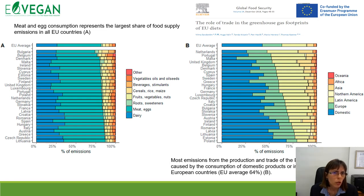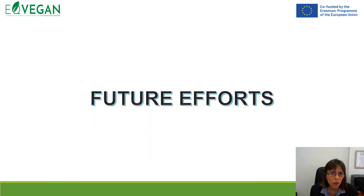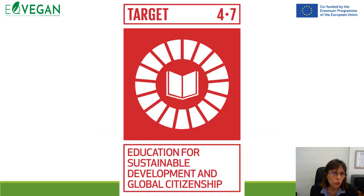Meat and egg consumption represents the largest share of food supply emissions in all EU countries. The aim is to use vegetable oils, oil seeds, cereals, rice, fruits, vegetables, and nuts, which have lower CO2 emissions. By eating a quality diet, we can tackle SDGs like no poverty, zero hunger, good health and well-being, responsible consumption and production, and climate action. Using quality education, we can educate consumers about sustainability and quality diet.